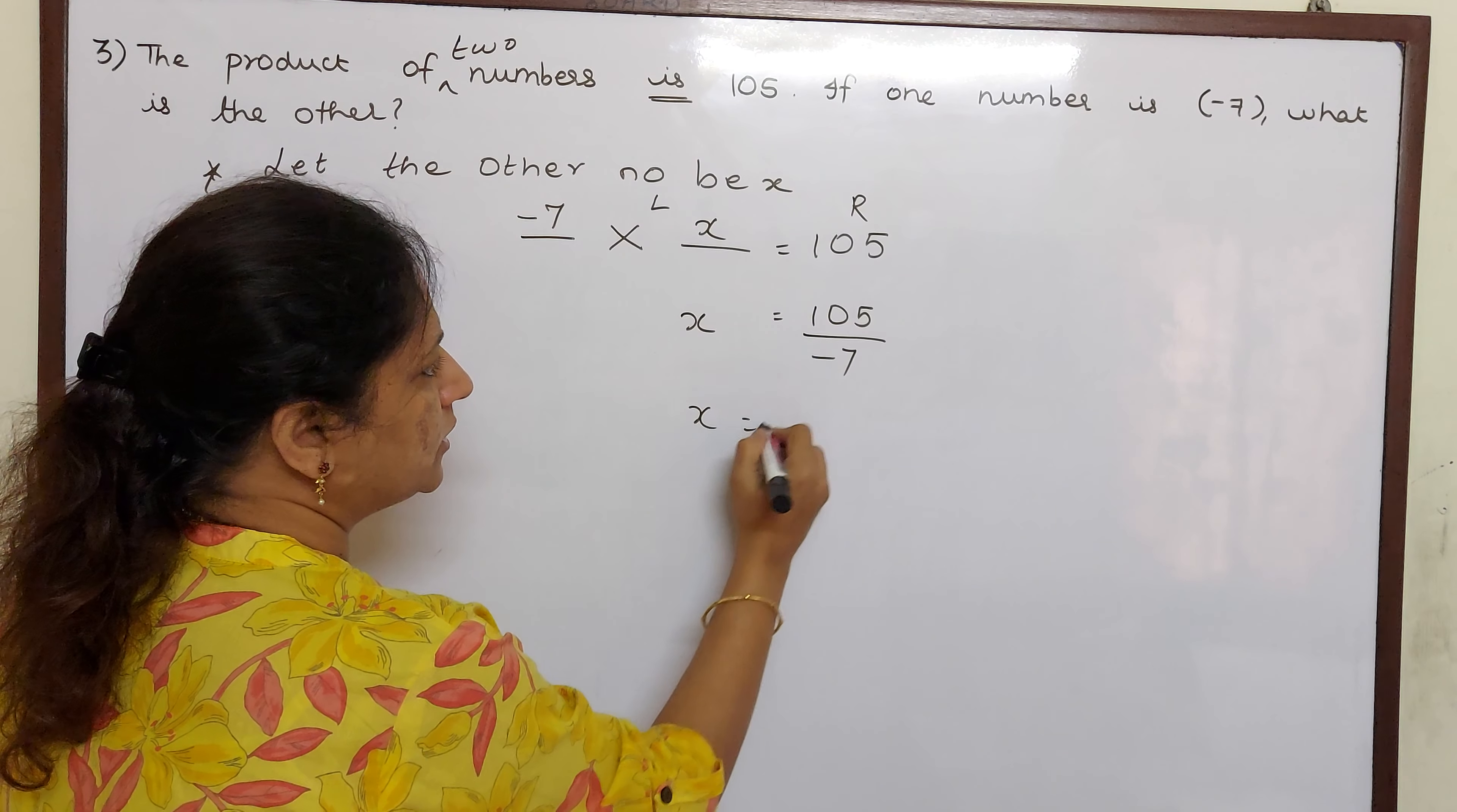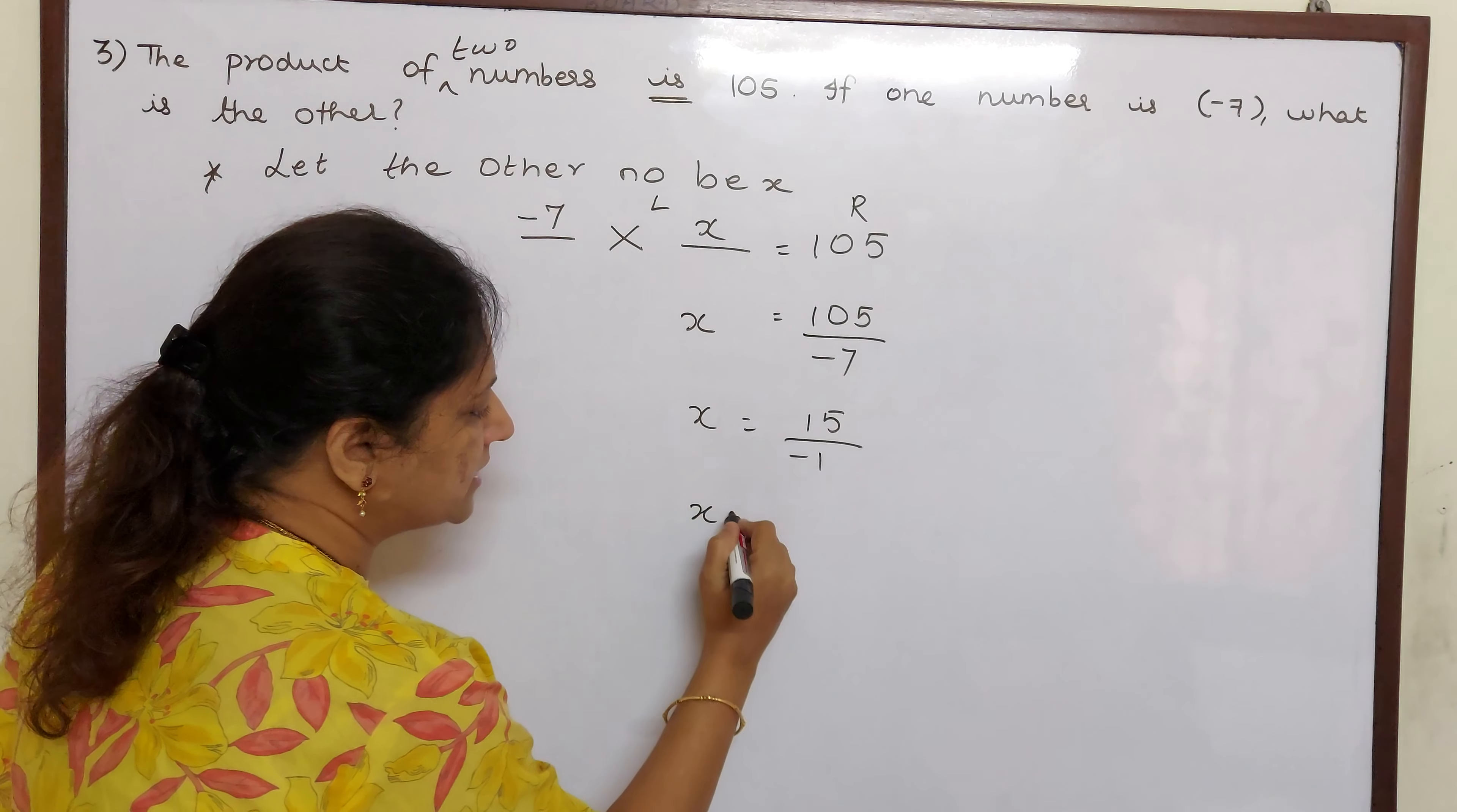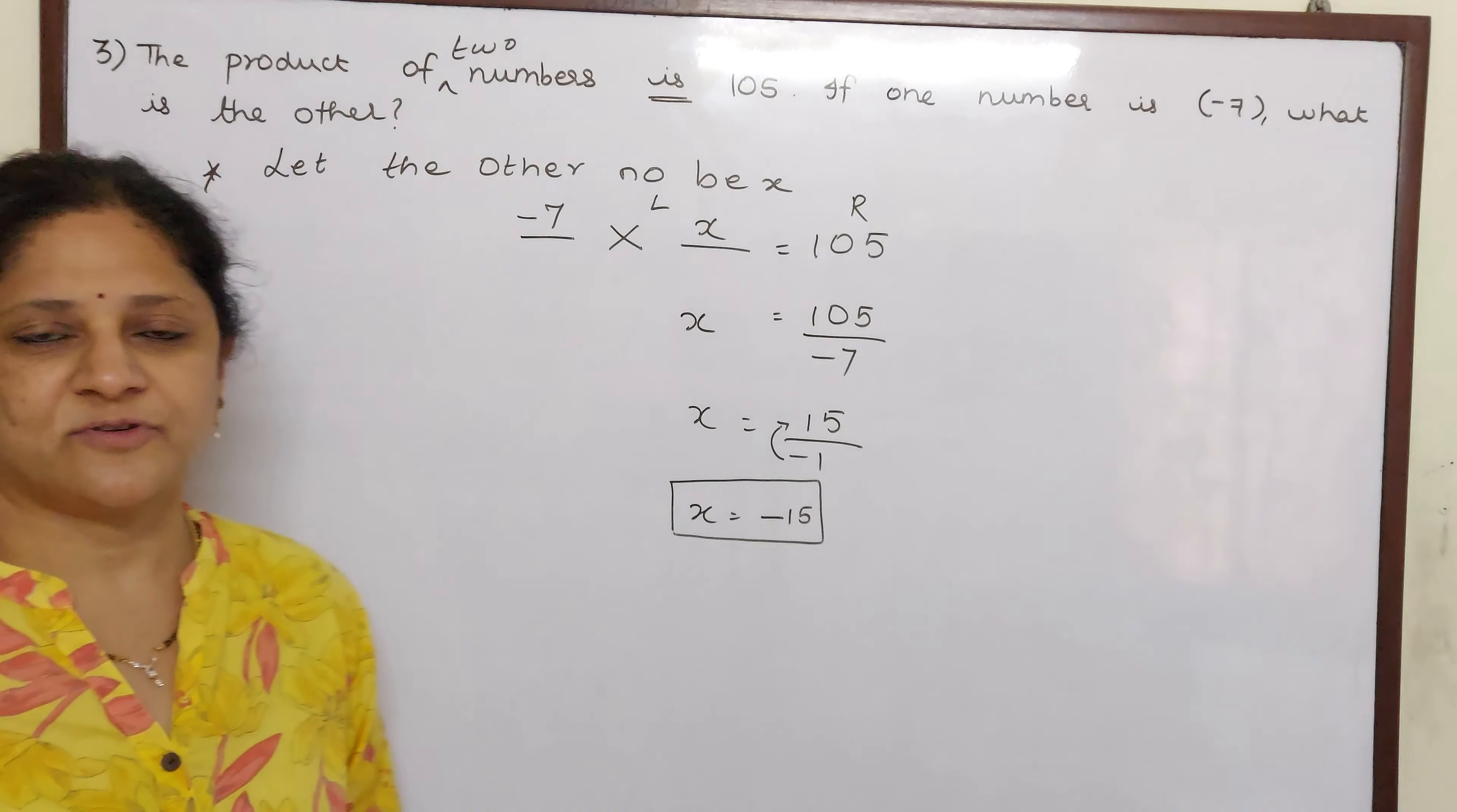Right? So X is equal to, when you divide 105 by 7, you will get 15 by minus 1. Now if you see, 1 in the denominator has no value. So you can shift to this minus sign on top. And your answer is, X is equal to minus 15. That means our other number is minus 15.